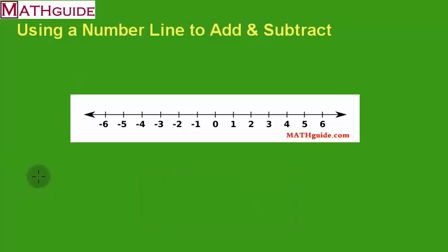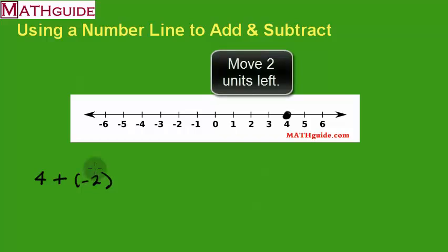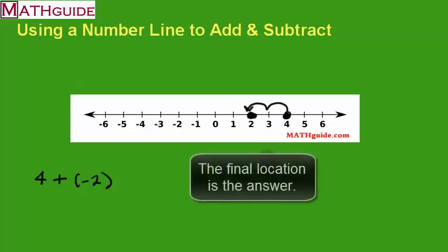Let's go through some examples to get a feel for how the number line works. Let's say we're going to take four and add negative two. You start at the number four — picture putting a dot right there on four. When I see that I'm going to add a negative, that means I'm going to move left two. So from four I move two to the left, and I land at two. The answer to this problem is two.